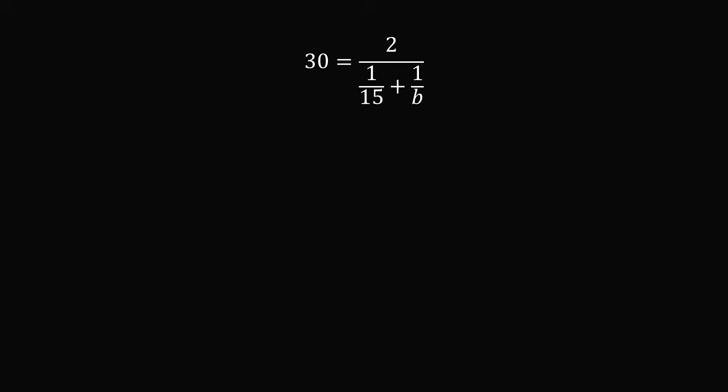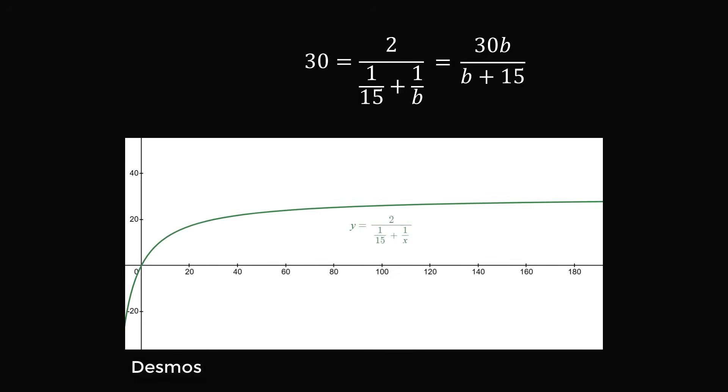So what's going on? Let's take a step back. We know this is equal to 30b divided by b plus 15. What would happen if we take the limit as b goes to infinity? That will exactly be equal to 30. So we're going to need the speed to be larger and larger until it reaches an infinite amount. And that's the only way we can average 30 miles per hour for the entire trip. We can understand this graphically. Here's a graph of 2 divided by 1 over 15 plus 1 over x. And we see that it has an asymptote exactly where y is equal to 30.